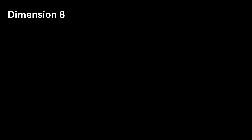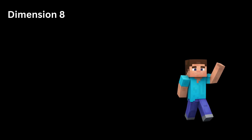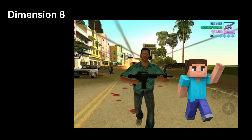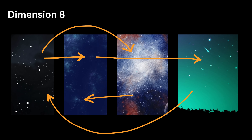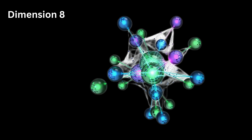Dimension Eight is like crossovers between entirely different games. Imagine all those different games can actually interact — characters from one game can appear in another. For example, imagine a character from Minecraft entering GTA. This is universes with different physics influencing each other. Dimension Eight allows interactions between universes with different rules. Cause and effect can cross over, creating a web of influences between realities.